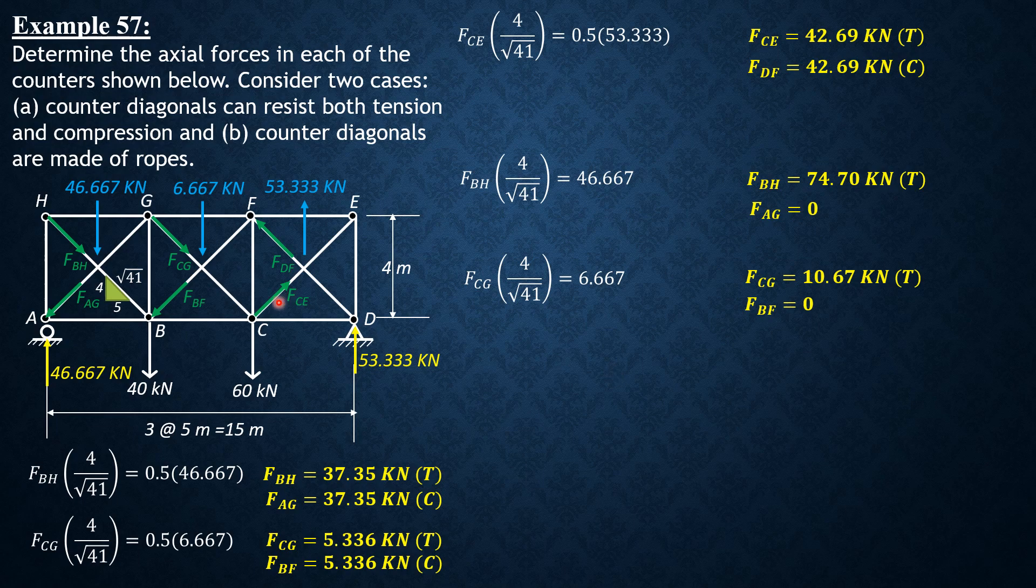And lastly, FCE this time is in tension. So the vertical component FCE times 4 over square root of 41 is equated to the panel shear, 53.333. So FCE is 85.37 kN, so automatically FDF will be zero.